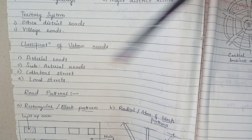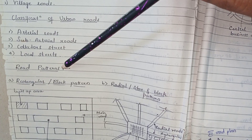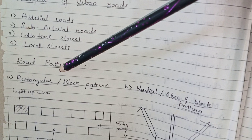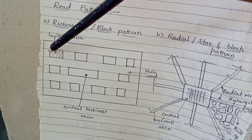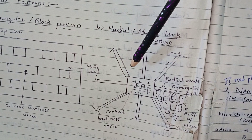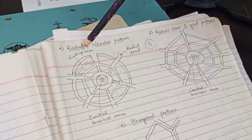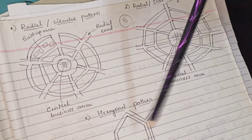Now we will move to road patterns. Road patterns may be rectangular block patterns, radial star patterns, radial circular patterns, radial star and grid patterns, and hexagonal patterns, as shown in these figures.